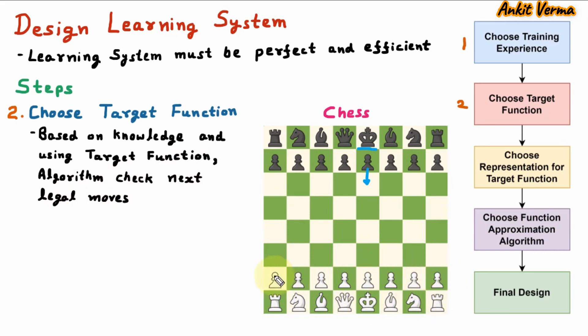Here, this side, computer algorithm is playing. So here it will see the target is king and this movement. So it will try that nearby pawn should be moved. So these are the legal moves that is decided by target function.